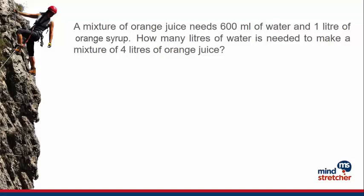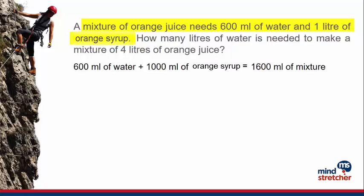Let's take a look at this question. A mixture of orange juice needs 600 milliliters of water and 1 liter of orange syrup. 600 milliliters of water and 1 liter of orange syrup makes up 1,600 milliliters of the mixture. So in one portion of the mixture, there is a volume of 1,600 milliliters.